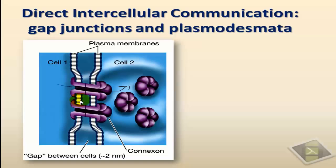The best example of gap junctions is those found between the cells of the heart. Cardiac muscle cells communicate this way, using gap junctions to quickly spread signals — usually ions — from one cell to another throughout the cardiac muscle tissue. This is crucial to allow, for example, the ventricles of the heart to contract as one unit.